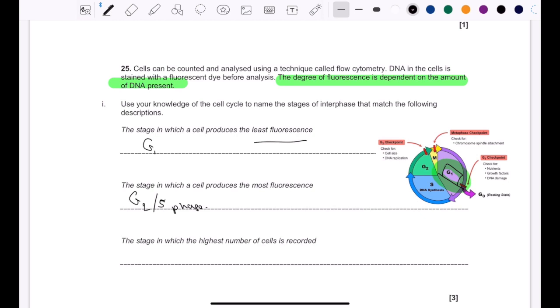Okay, next one. This one. The stage in which the highest number of cells is recorded. This one trips up so many people. Pay attention, guys. The highest number of cells, not DNA, cells. We are not talking about fluorescence. Read it properly. People typically say G2, easy. They write it down, move on. Hold up. Take a step back. It is not G2. And let me explain.